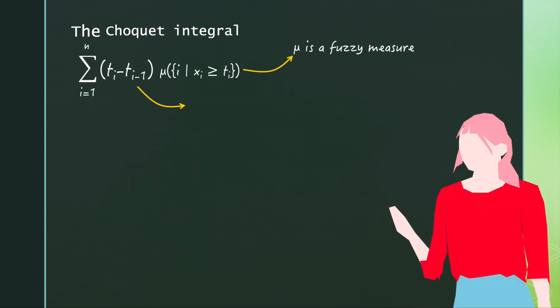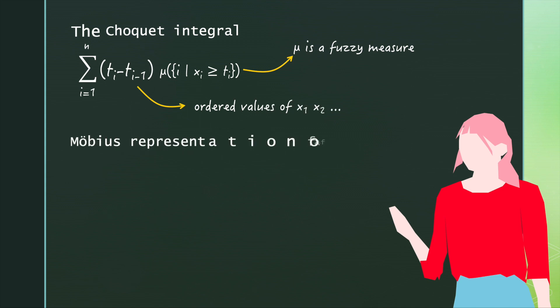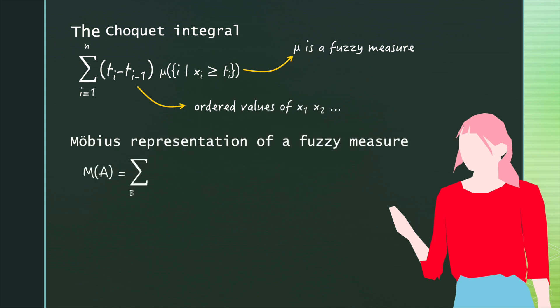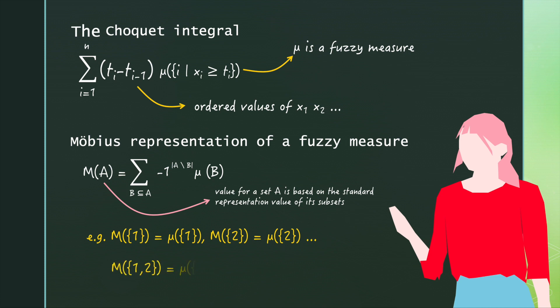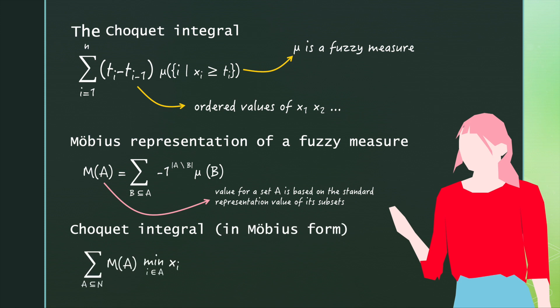First, we'll consider an additional but equivalent form of the Choquet integral that represents the weights in what's called Möbius representation. These values will be the same whenever we consider a single worker, but as we consider larger groups, we have an equation roughly interpreted as the marginal contribution of that subgroup — some measure of interaction. We'll see later that this will allow us to look at some simplifying approaches.